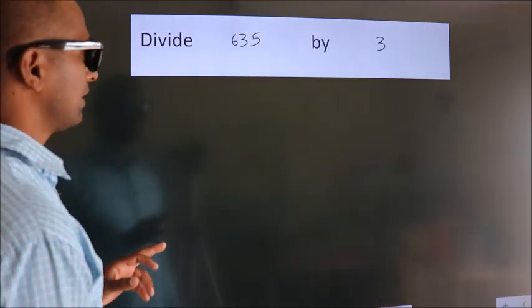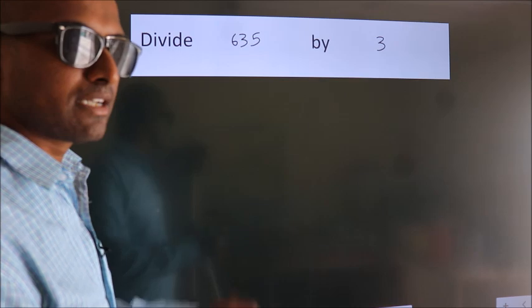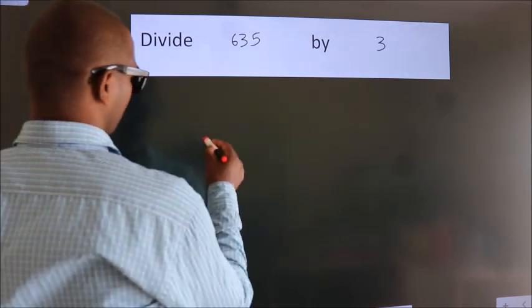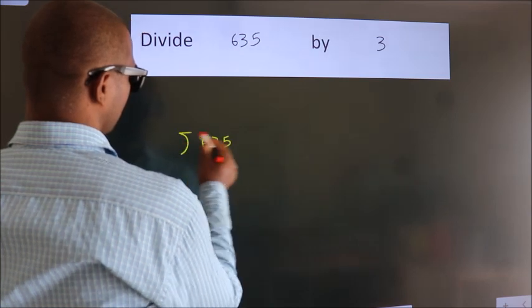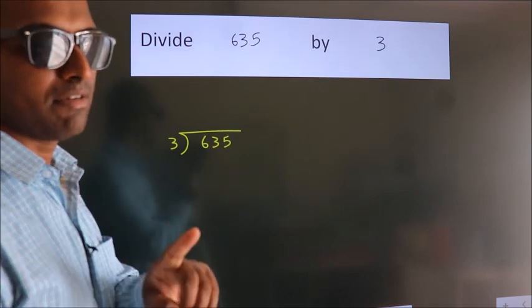Divide 635 by 3. To do this division, we should frame it in this way. 635 here, 3 here. This is step 1.